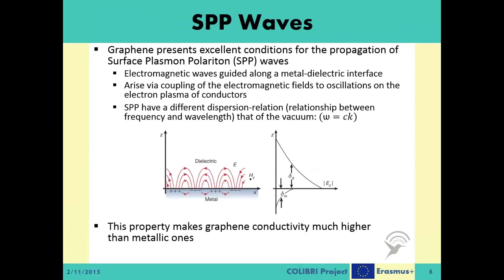Surface plasmon polaritons (SPPs) are electromagnetic excitations propagating at the interface between a dielectric and a conductor, evanescently confined in the perpendicular direction. These electromagnetic surface waves arise via the coupling of the electromagnetic fields to oscillations of the conductor's electron plasma. Surface plasmons (SPs) occur as light-induced packets of electrical charges that collectively oscillate at the surfaces of metals at optical frequencies. Under specific conditions, incident light couples with the surface plasmons to create self-sustaining propagating electromagnetic waves, also known as surface plasmon polaritons.